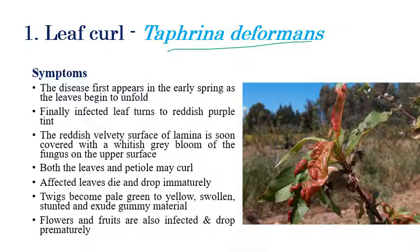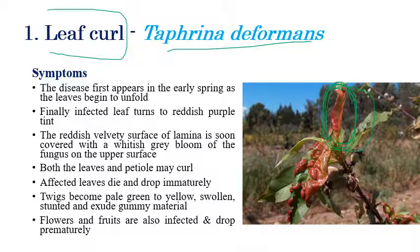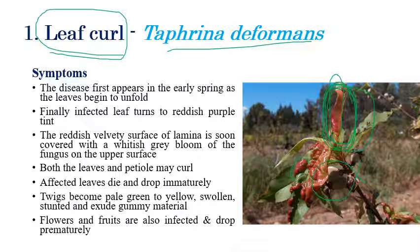The first disease is leaf curl, caused by Taphrina deformans. The symptoms include discoloration of leaves, with leaves turning reddish-purple, along with curling and distortion of leaves. The name itself indicates curling — so the major symptom is curling of the leaf along with distortion. Both the leaves and petioles are curled, and we can clearly see inward curling of leaves.